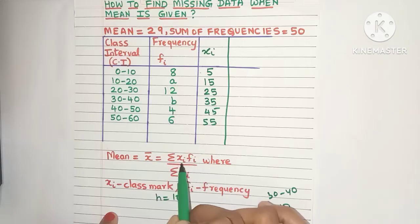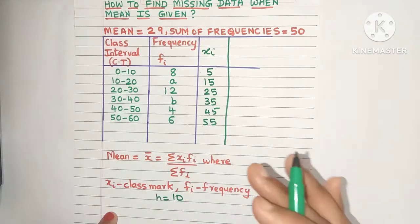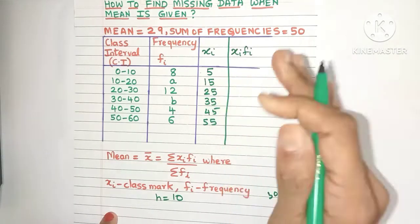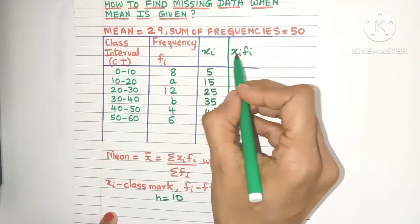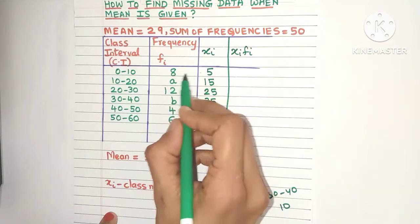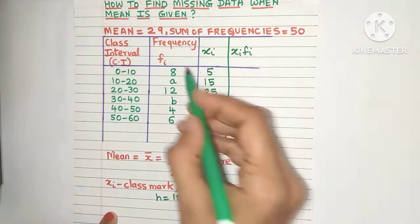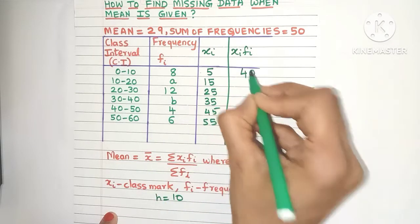Now let's look at the formula. It's written xi into fi, which means I need another column. By looking at the formula, the next column is xi into fi. Just multiply xi and fi for every class interval. 8 times 5 is 40.